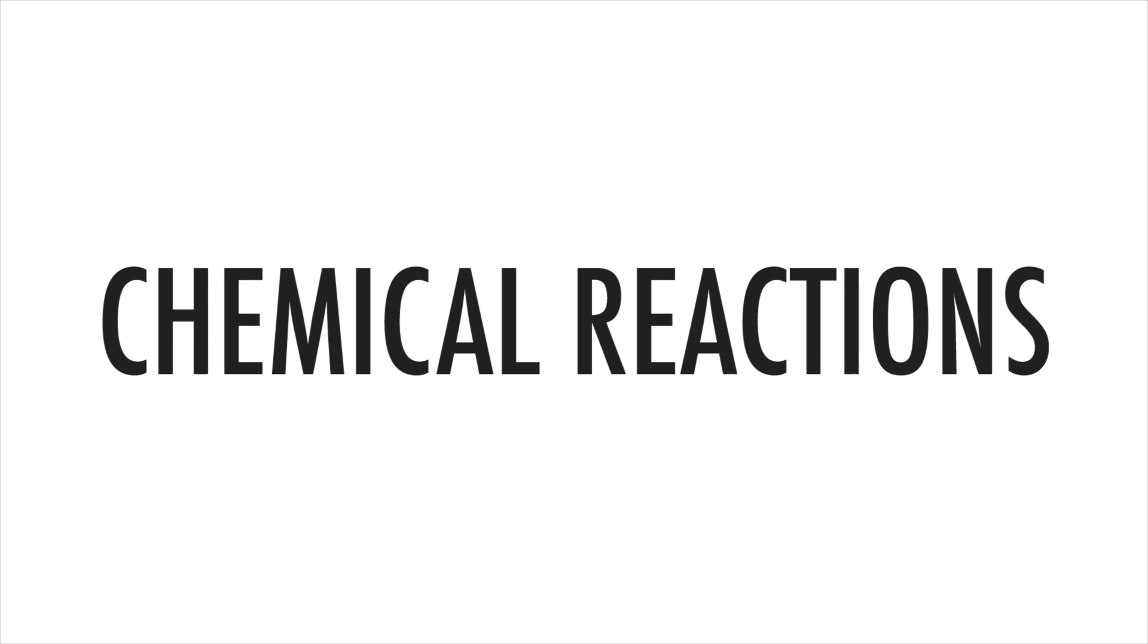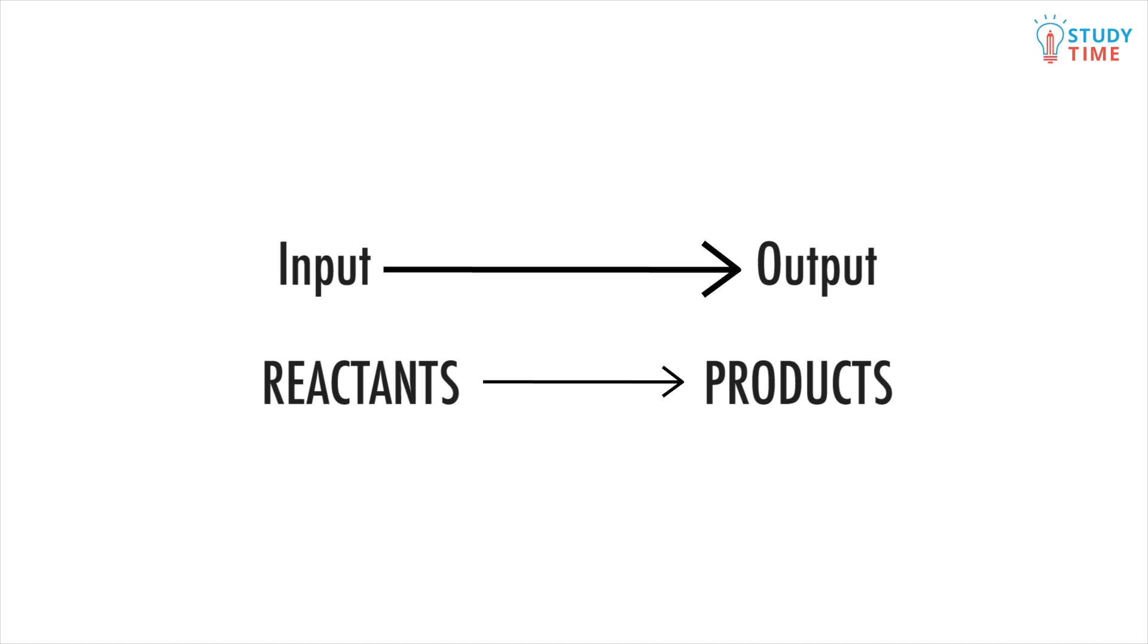Chemical equations are similar to equations in maths. They show an input and an output. The input on the left is the reactants. These are the chemicals we will be reacting together, and on the right side is the product, which is what we get after the reaction.